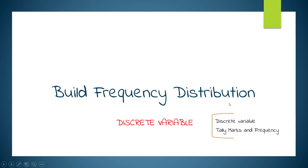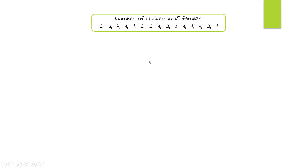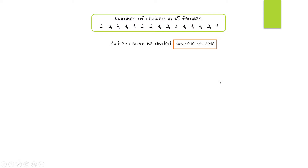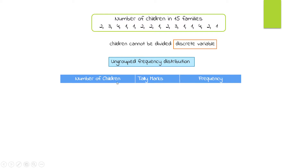Welcome. Let's build the frequency distribution for a discrete variable. For that, we need to know what a discrete variable is and what tally marks and frequencies are. We are given the number of children in 15 families. The observations range from 1 through 4. Since we cannot have 2.25 or 3.35 children, this is a discrete variable. We are going to do an ungrouped frequency distribution because we have a smaller number of values.